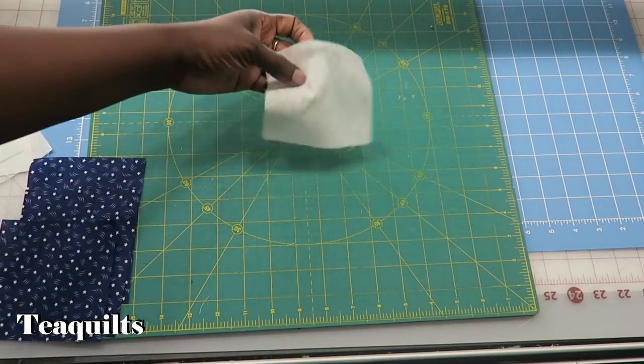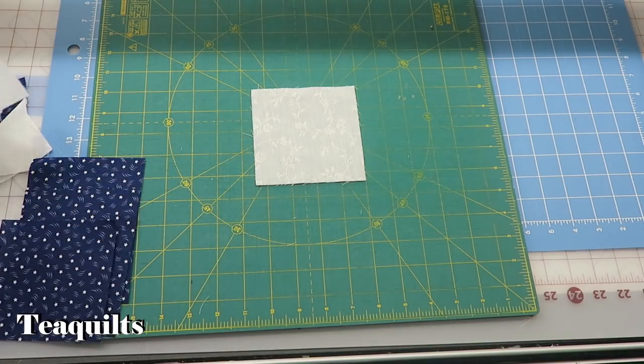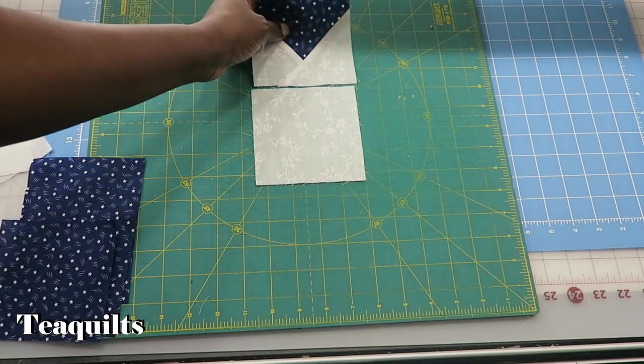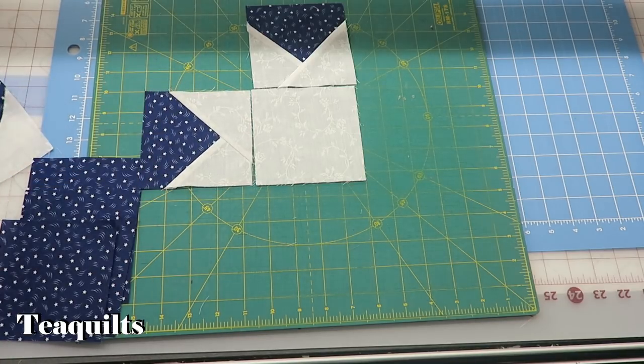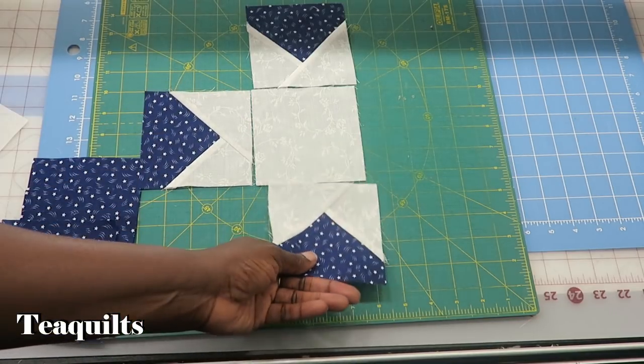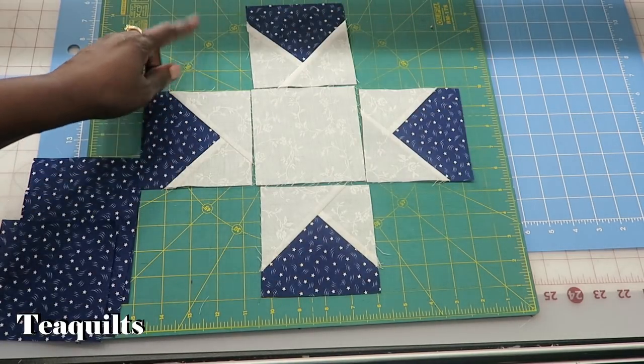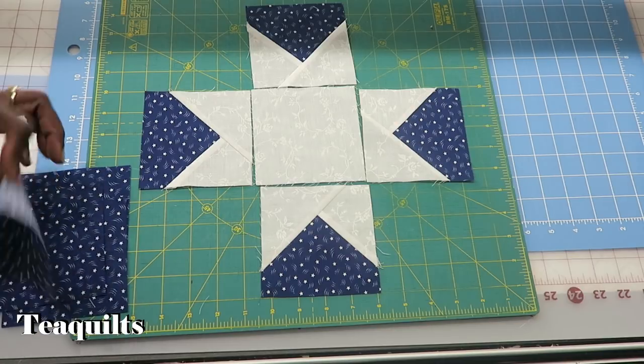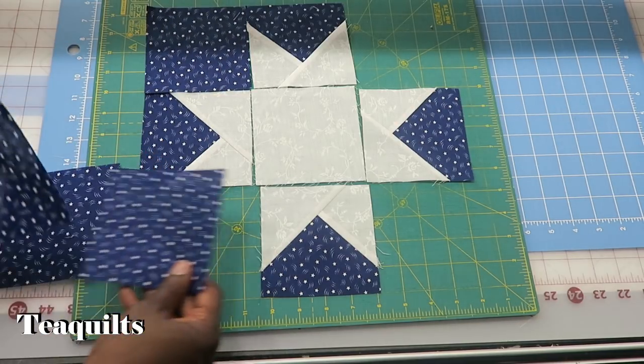Next, we're going to lay it out. We take our center square in our white and put it in the middle, and then we're just going to put our star points around that center square. And then, as you can see by the blank positions, we just add our remaining squares in the corner.